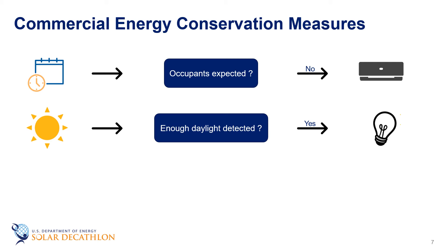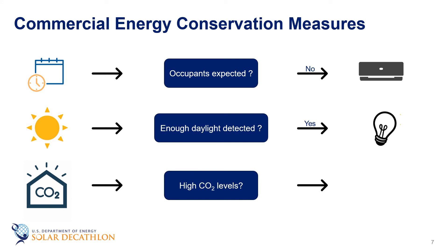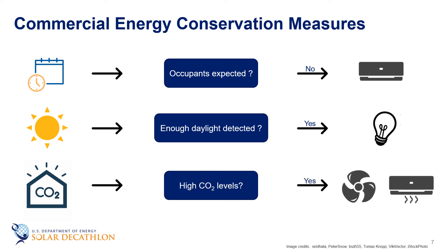Yet another way of saving energy is demand controlled ventilation. Carbon dioxide sensors can detect high carbon dioxide levels in a room. The carbon dioxide readings could be used to regulate the air circulation in the room by increasing the fan speed or opening up dampers to ensure air quality for the health and well-being of occupants. These measures and many more contribute to energy savings in commercial buildings.